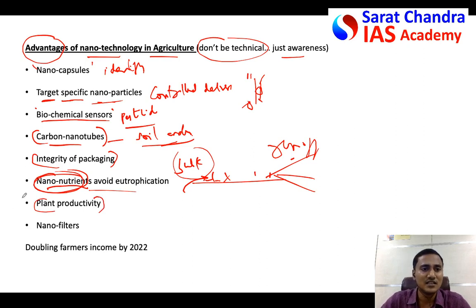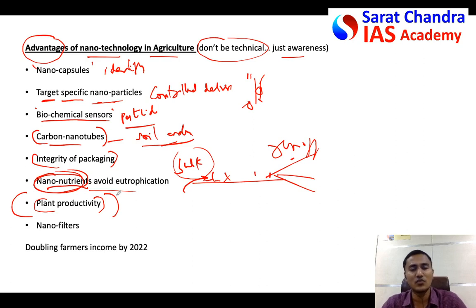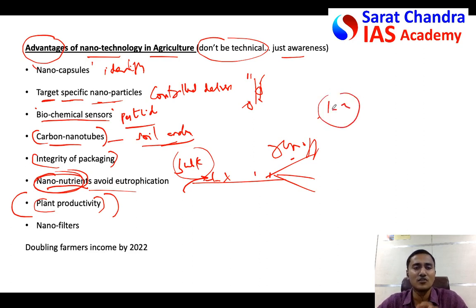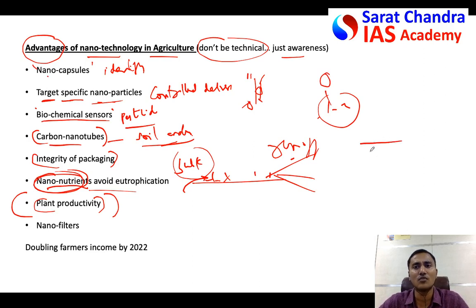Plant productivity can also be increased. Note: even if you know nothing about this question, you can still attempt it by writing general statements — that nanotechnology has several applications in agriculture, will help increase productivity, reduce pests and diseases, and improve food security. Such answers may get only one or two marks. But those who write specific details like these will get close to seven out of ten marks.